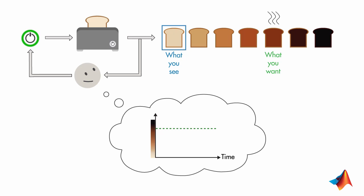At each time instant, you compute an error between what you see and what you want. If this error is not zero, you keep toasting.